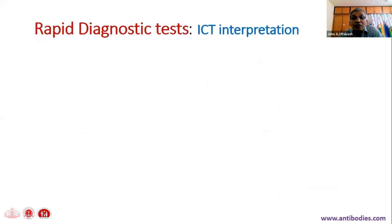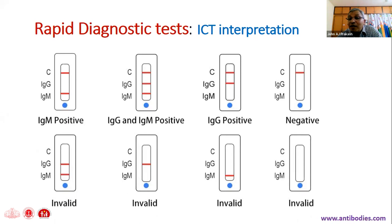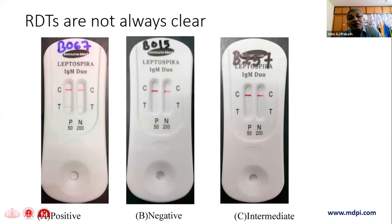Moving on to rapid diagnostic tests: since MAT and ELISA require batch testing and cannot be done on demand, and leptospirosis is a life-threatening acute febrile illness, quick diagnosis is needed. Immunochromatographic tests (ICTs) allow testing on a single sample on demand. However, while diagrammatic representations look clear, in practice results are often faintly positive, creating inter-reader variability — one person says positive, another says negative.